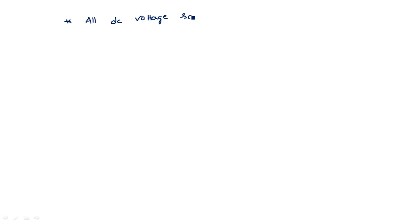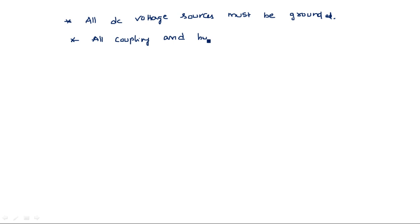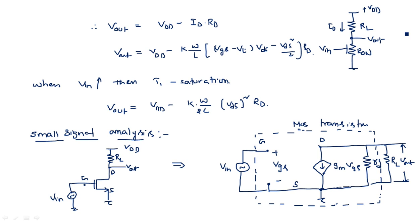In the small signal model, keep two points in mind: first, all DC voltage sources must be grounded; second, all coupling and bypass capacitors must be short-circuited. That is why VDD is grounded, and from drain to ground we have RL. The output Vout is also measured from drain to ground.